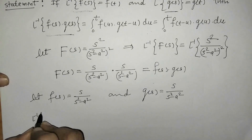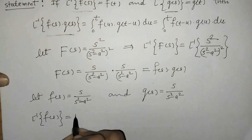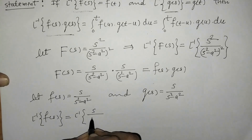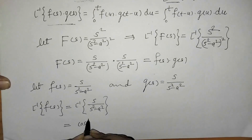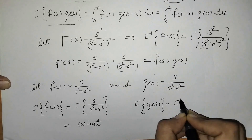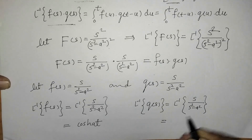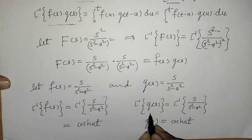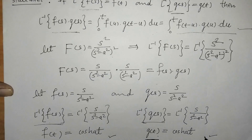Now we can find L⁻¹ of these two functions easily. We can check that this is a standard formula, and we know its inverse Laplace transform is cosh(At). Same here, L⁻¹ of G(S) = L⁻¹ of S/(S² − A²), this is also cosh(At). So we got L⁻¹ of G(S) = g(t) and L⁻¹ of F(S) = f(t). Here we have found f(t) and g(t).